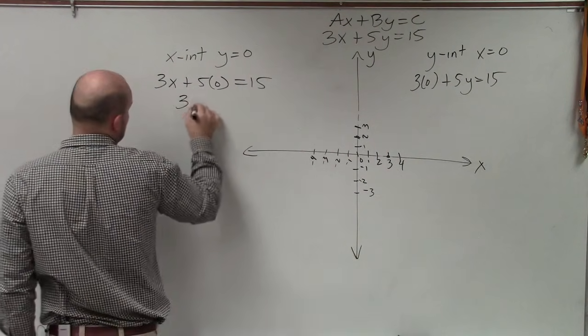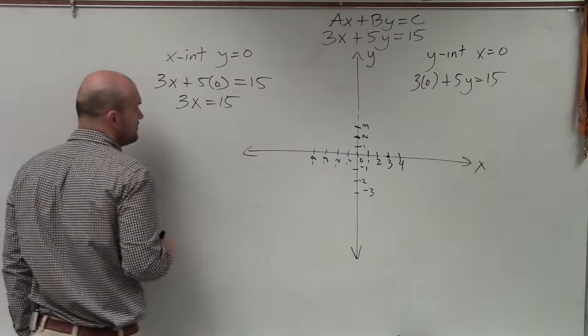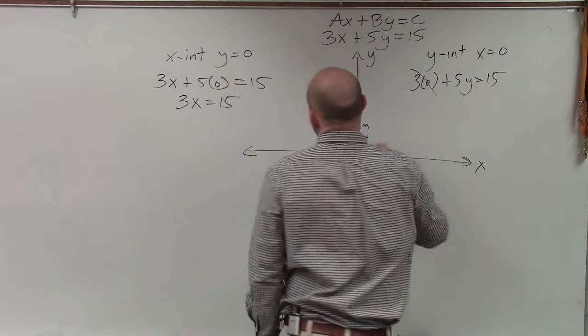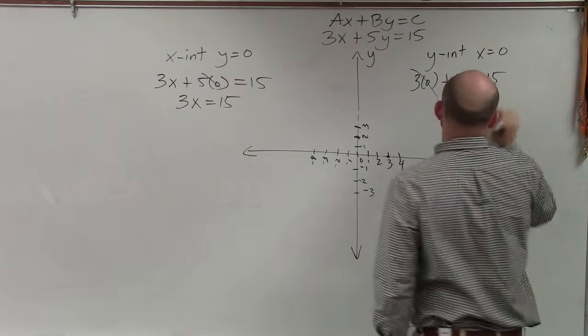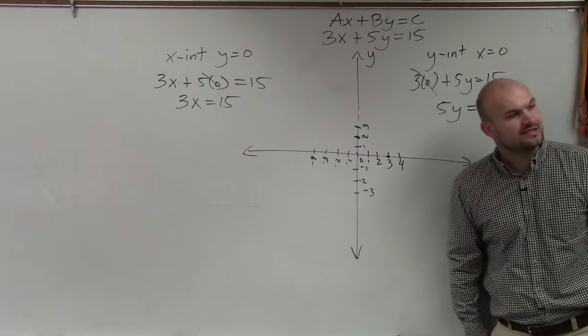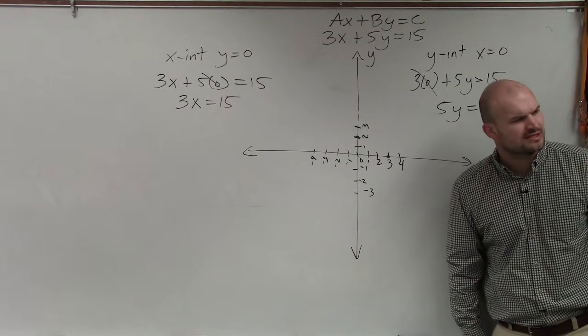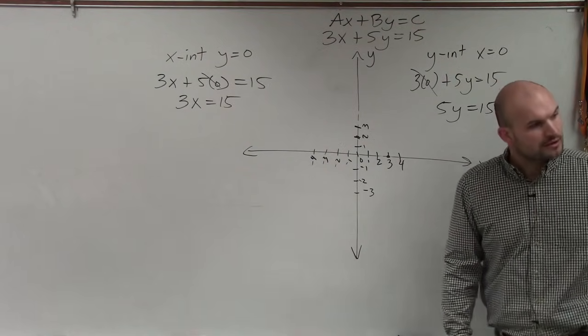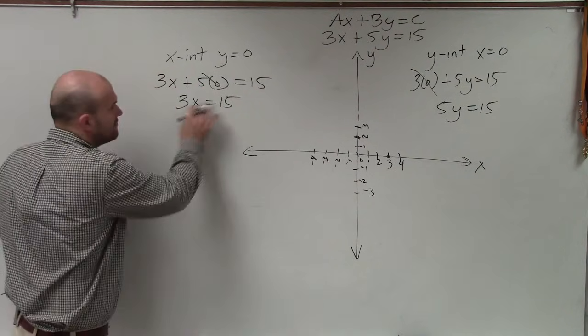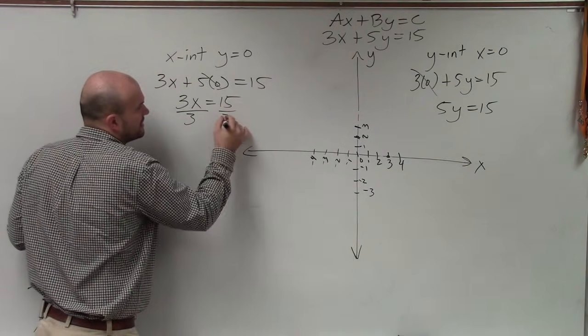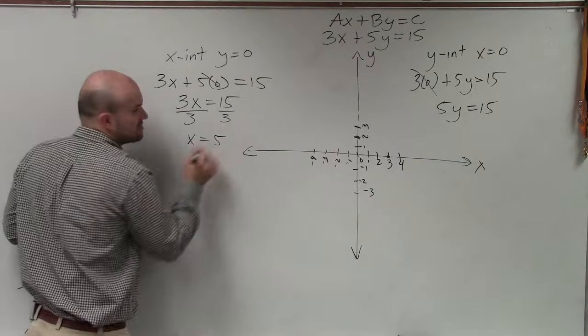Now, the next thing is I'll just set 3x equal to 15, because any time you multiply a number times 0, it's going to be 0. So I have 3x = 15. You take 5 times 0, that's 0, so you have 3x = 15. Divide by 3, divide by 3, x equals 5.